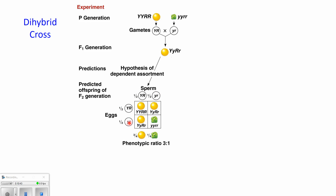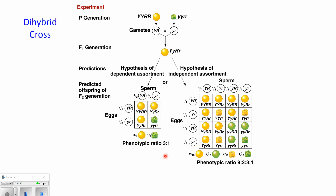If dependent assortment were true, then the F2 generation — the babies of this plant — would show three-fourths with yellow round seeds and only one-fourth with green wrinkled seeds, a three-to-one ratio, which looks just like a regular monohybrid cross. The other possibility is called independent assortment. It says that which one of the two Y alleles gets passed down — big Y or little y — has nothing to do with which one of the two R alleles gets passed down. So you could have a sperm with big Y and big R, or a sperm with big Y and little r.